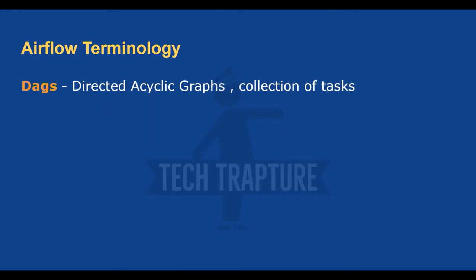Let's look at a few terminologies. What is a DAG? A DAG is a Directed Acyclic Graph — a collection of tasks. It is called 'directed' because it can go in specific directions based on conditions. For example, there are three tasks: if the first task is successful, execute the second task; if the first task fails, execute the third task.